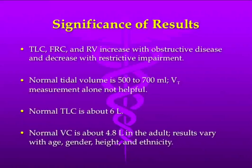What does all this mean clinically? When you have an increased total lung capacity and your RV is increased, you're going to have an increased FRC. With an increased RV and FRC, you're going to have an increased TLC. When you have a restrictive impairment, these are going to be reduced. Looking at tidal volumes alone cannot tell us enough — that's why we need to look at total lung capacity.